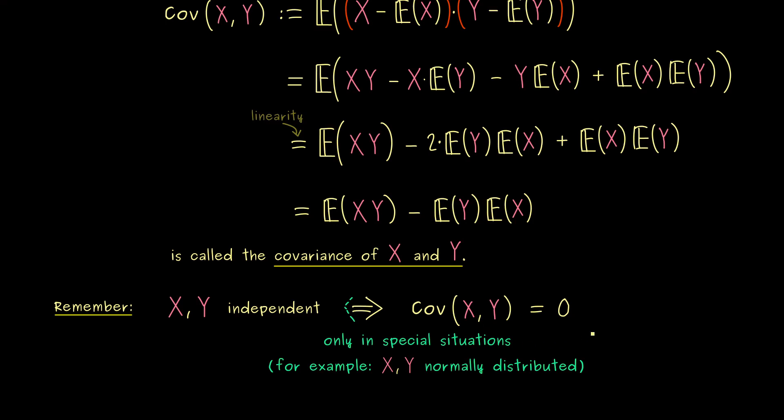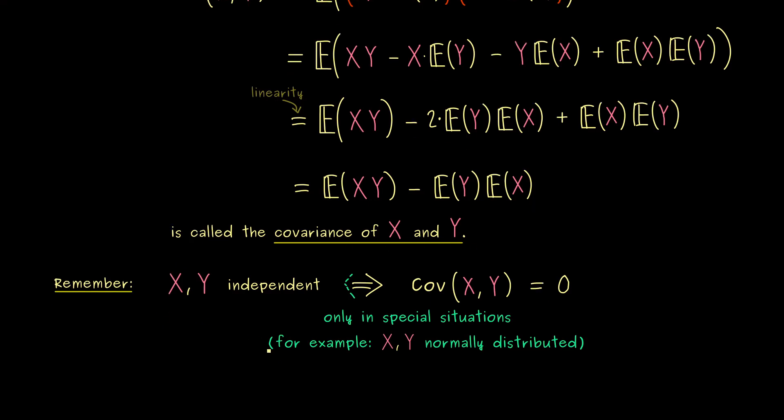Nevertheless, we always have the contraposition here, which means, if the covariance is not zero, the variables are not independent. However, now the question is, do we also know, how much they are not independent?